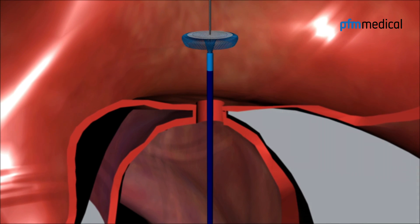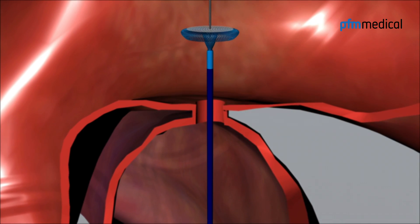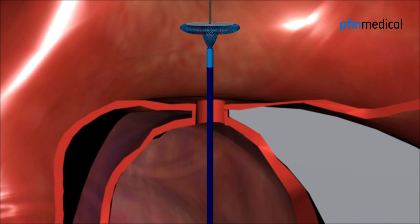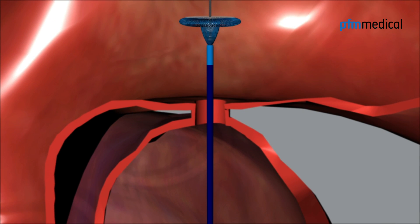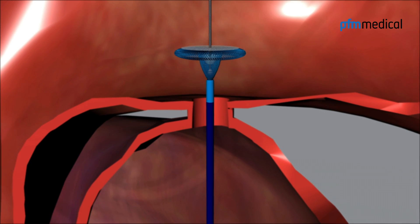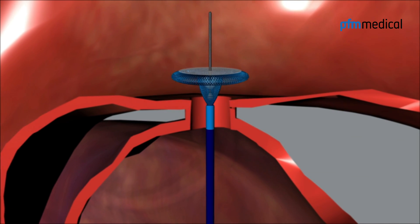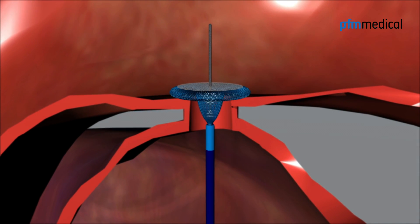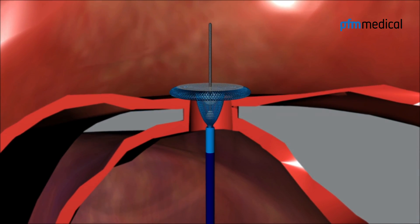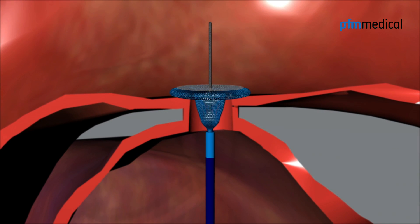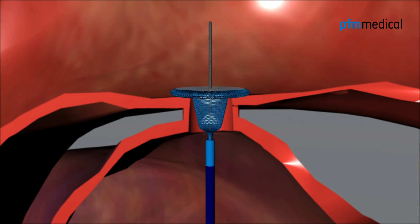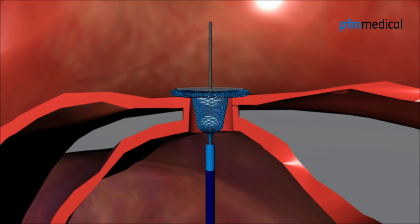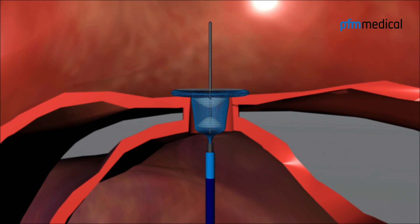The stent part is only partly configured at this point. The entire system is retracted until the occluder is carefully positioned inside the ductus. Now the stent part expands fully inside the ductus.